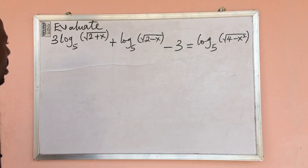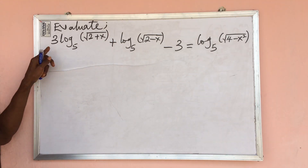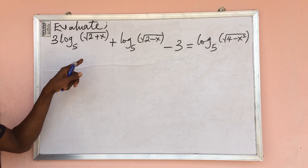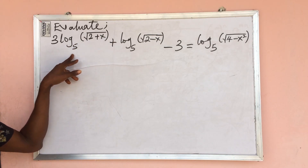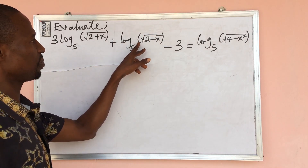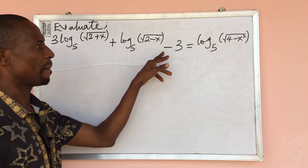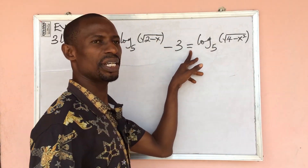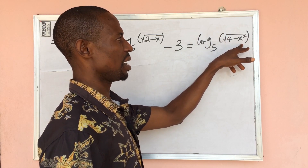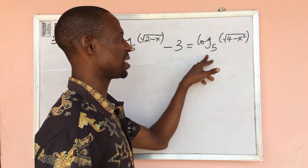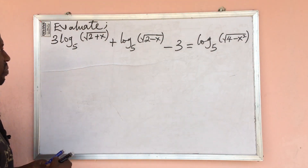Now we have a challenge on logarithm. The question says: evaluate 3 log base 5 of (root of 2 plus x), plus log base 5 of (root of 2 minus x), minus 3, equal to log base 5 of (root of 4 minus x squared).